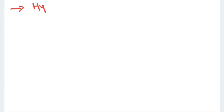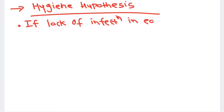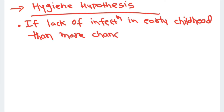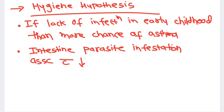One interesting etiology for asthma is the hygiene hypothesis. If there is a lack of infection in early childhood, the chances of asthma are more — the child is at greater risk for developing asthma if childhood infection history is absent. Intestinal parasitic infestation is associated with a decreased risk of asthma.